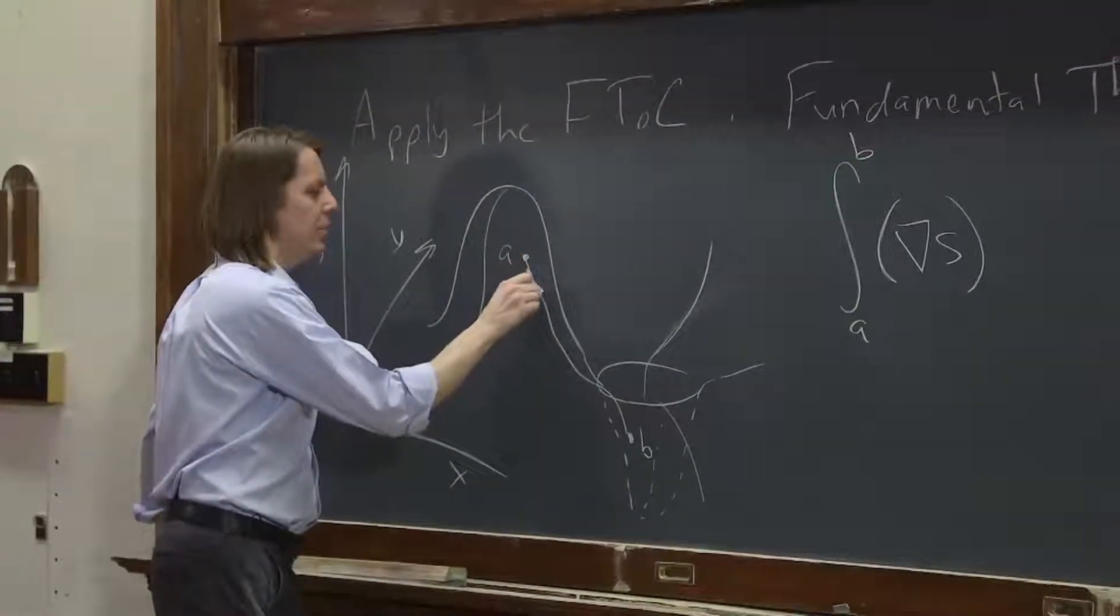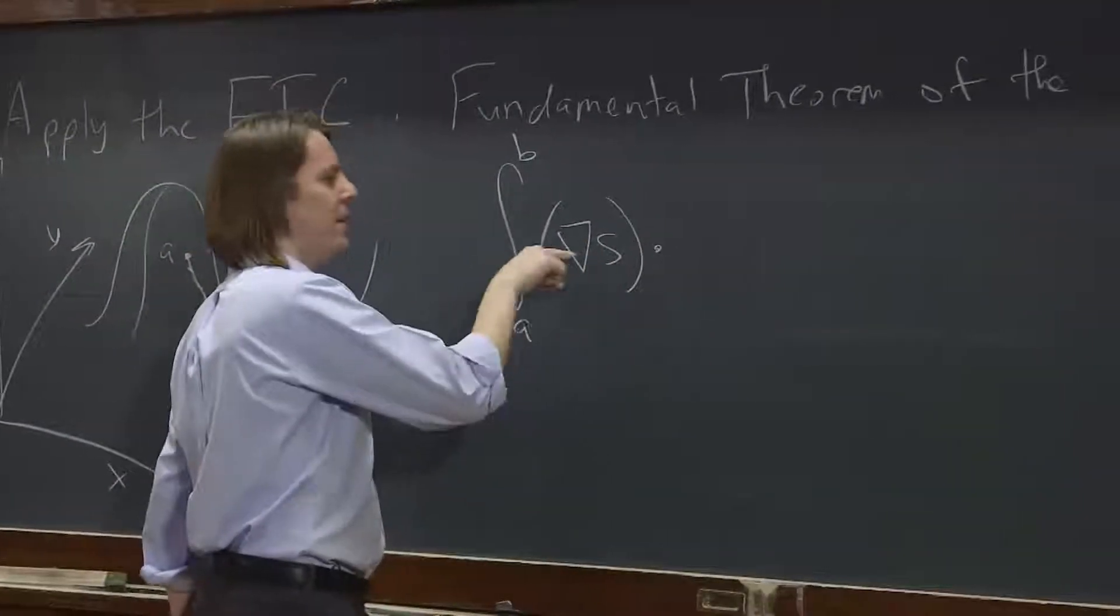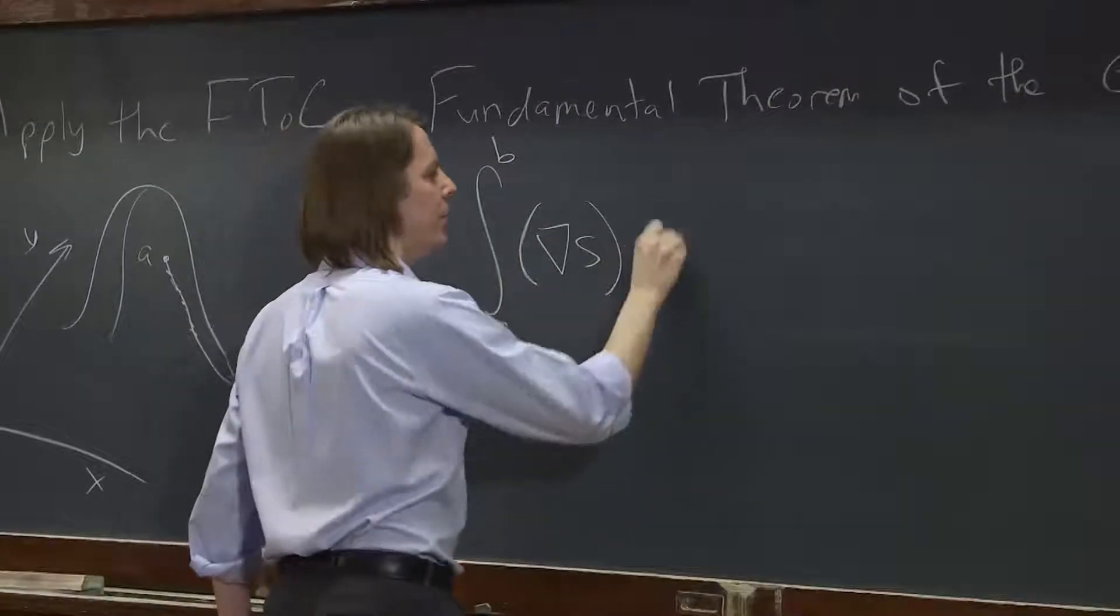And if we're going to walk, we have to think of little DLs as we walk. It's a contour integral, or a path integral. Because remember, the gradient gives you a vector, so it's dot DL.